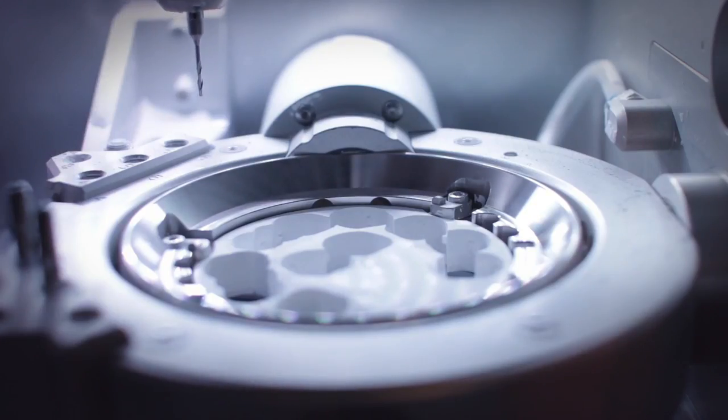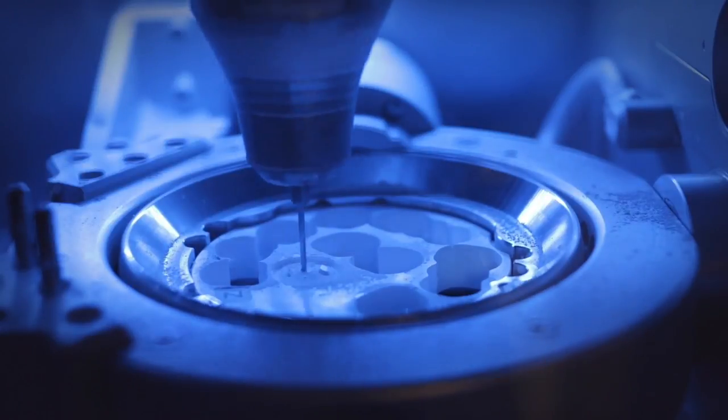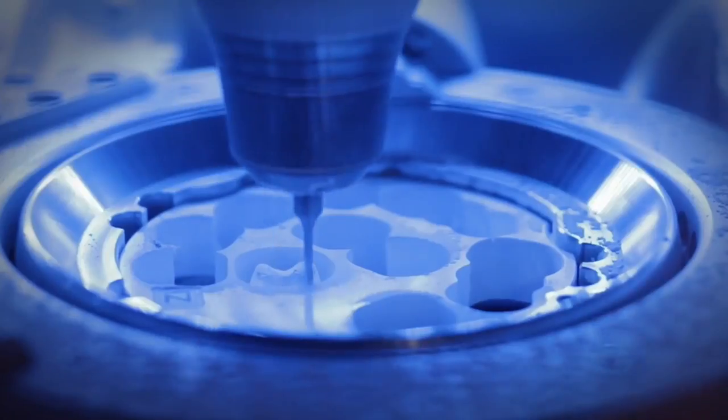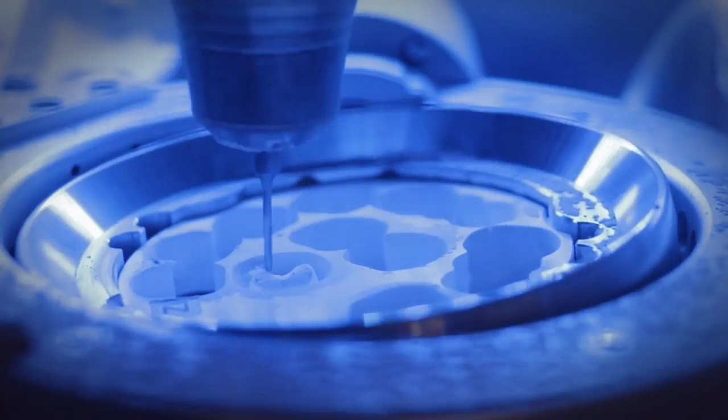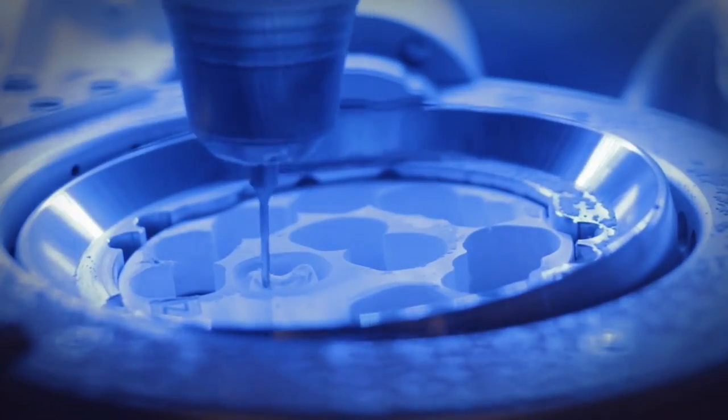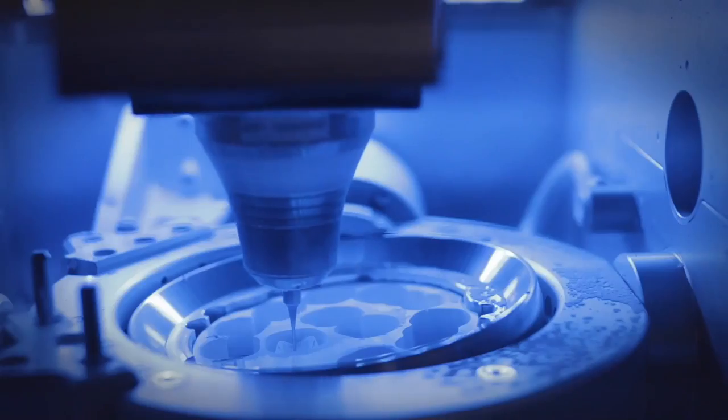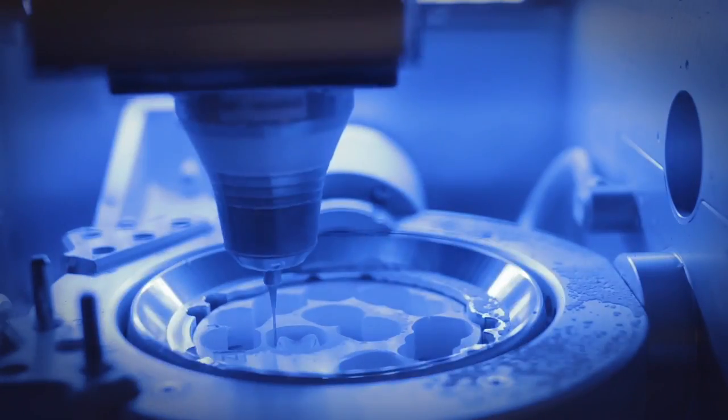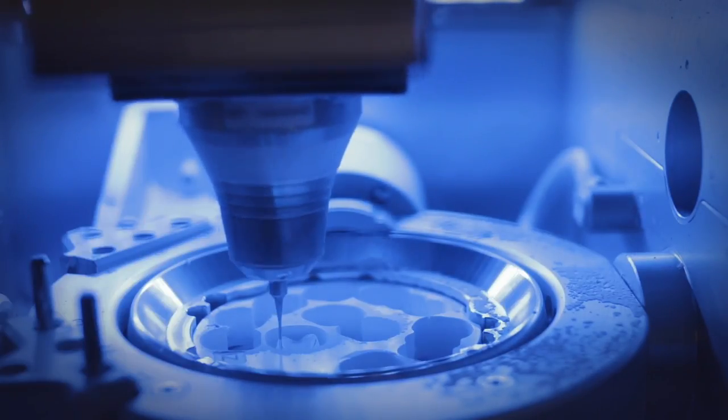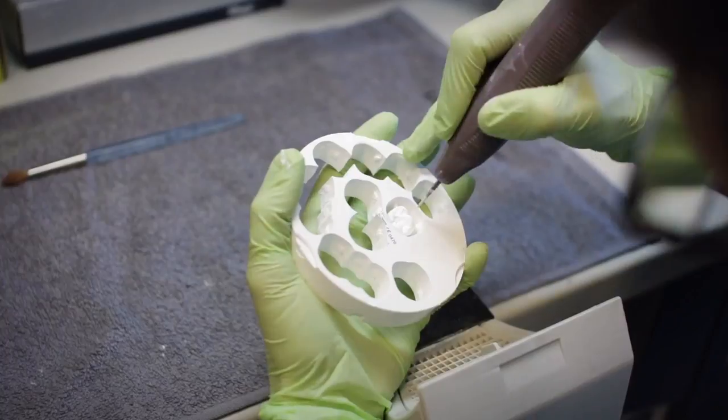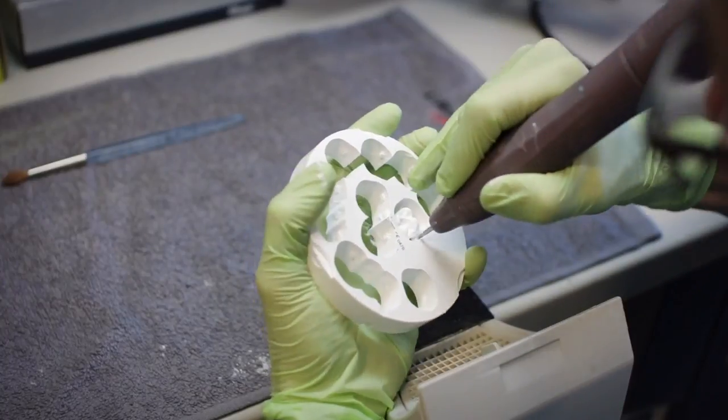The material we're using for this demonstration is zirconia with the patel. When sintered, this material shrinks 20%. The crown is carefully removed from the block.